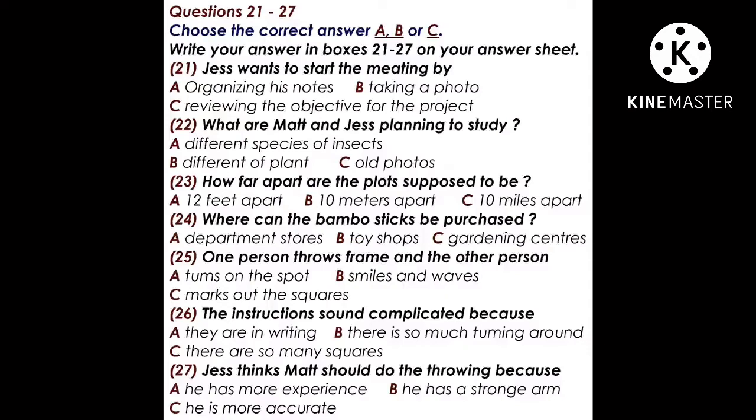We need to record, photograph and identify the plant species in ten one-square-metre plots. Does it say anything about where these plots should be and how they should be laid out? It says that all the plots need to be no more than ten metres apart.